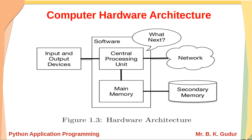We will now move on to a brief introduction to computer hardware architecture. A computer architecture has different parts: input and output devices, central processing unit (CPU), main memory, secondary memory, and network. The CPU is responsible for asking 'what next?' The software resides in main memory and is processed by the CPU.